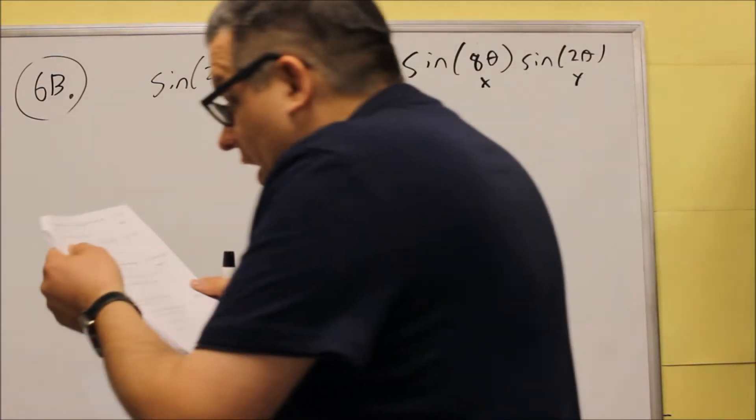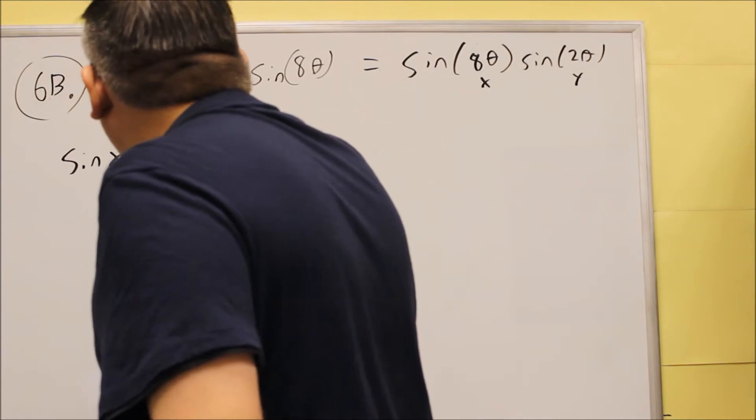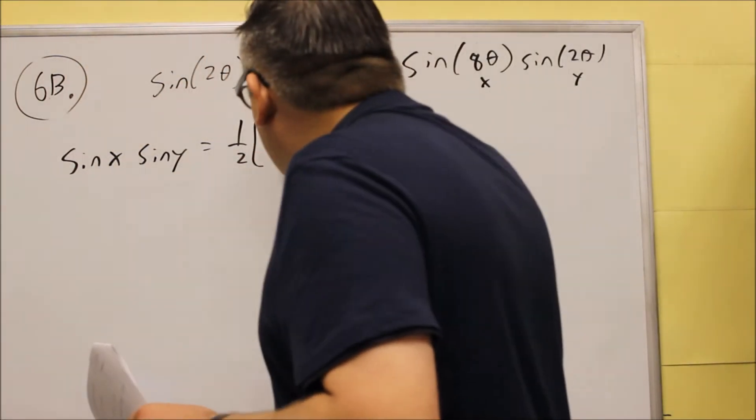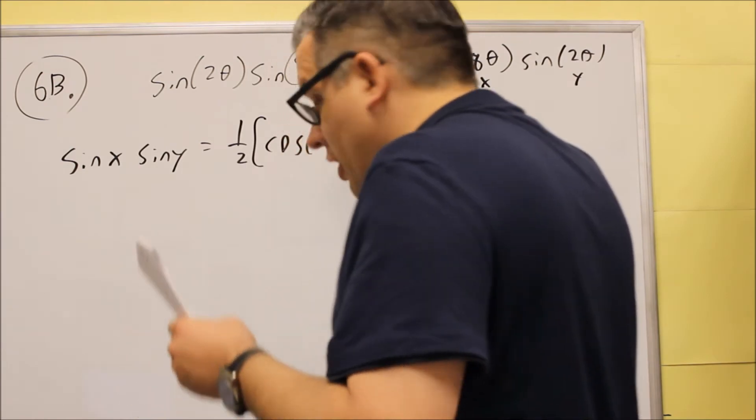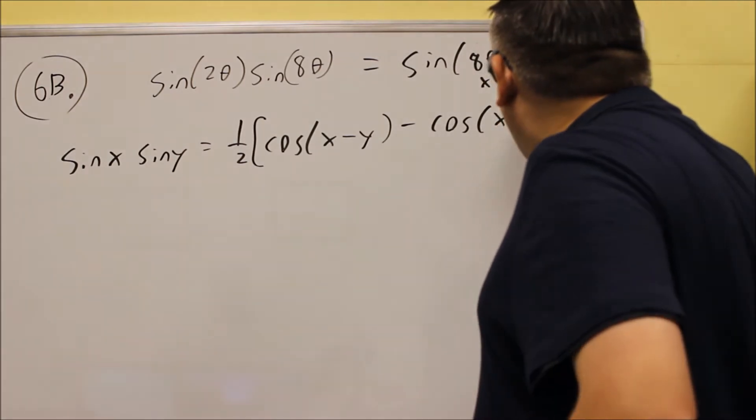And so the reason why I'm doing that is because I'm using this formula, sine x, sine y. This is the product-to-sum formula I'm going to use. This is cosine of x minus y minus cosine of x plus y.